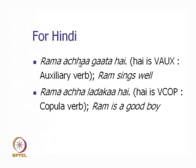The most powerful clue comes from suffixes and the morphological features of the word itself. In this case, 'accha' has the same word form in both cases, so there is no morphological clue. Furthermore, it is possible to have some amount of text between 'accha' and 'gaata' or between 'accha' and 'larka' — for example, 'Ram to accha hi gaata hai' with the particle hi inserted between 'accha' and 'gaata,' or 'Ram to accha hi larka hai.'